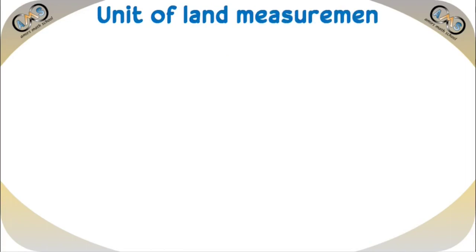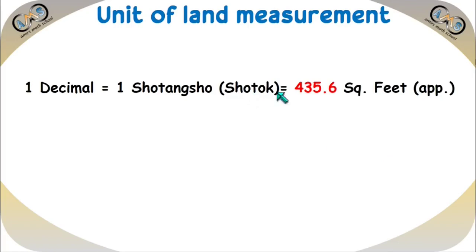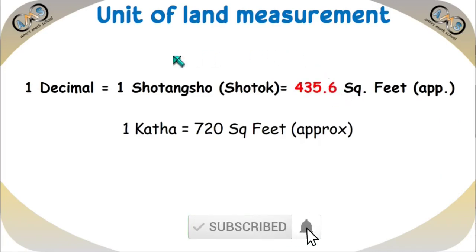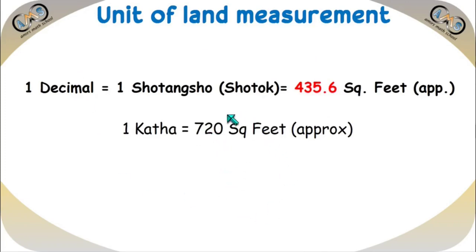Regarding units of length measurement: one decimal equals one shotang shot, which we call one shotok, equal to approximately 435.6 square feet. One katha is approximately 720 square feet. We find the area in square feet, then divide by 435.6 to get shotok or decimal, or divide by 720 to get katha. Once we have the exact area, we can convert it to any unit — decimal, shotok, or katha.